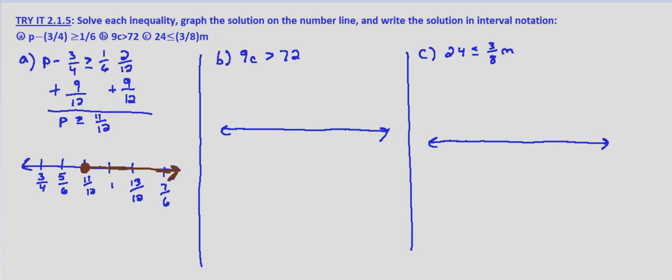And then in interval notation, we're starting at 11 twelfths. It's inclusive, so we use a square bracket 11 twelfths, and we're going to infinity.